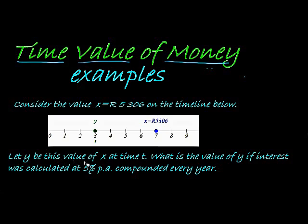Let Y be this value of X at time T. So there's time T. That's the value Y, and it's the same value but at a different time period. What is the value of Y if interest was calculated at 5% per annum, compounded every year?